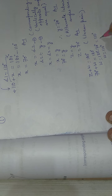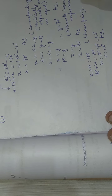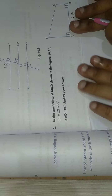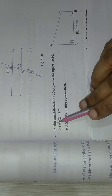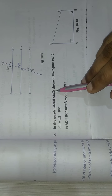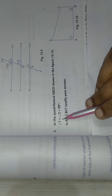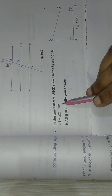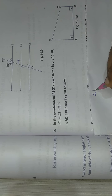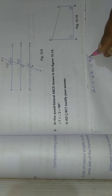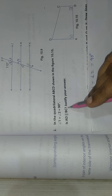W = 110 degrees. Now moving to Question 2. In quadrilateral ABCD — a plane figure bounded by four line segments — angle 1 and angle 2 are both equal to 90 degrees. We need to justify that AD is parallel to BC.